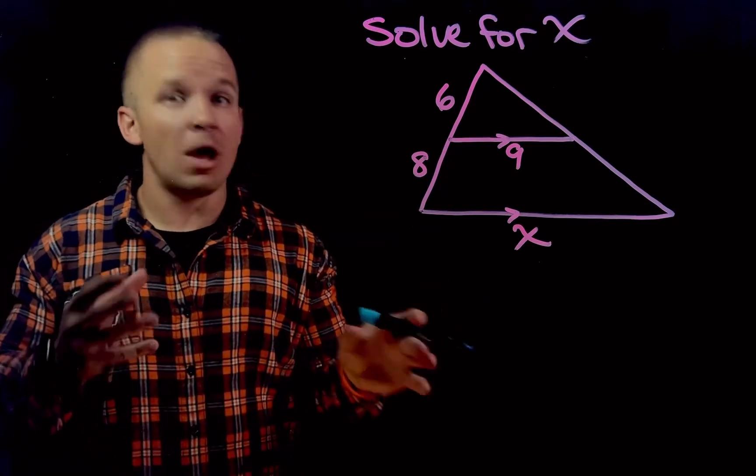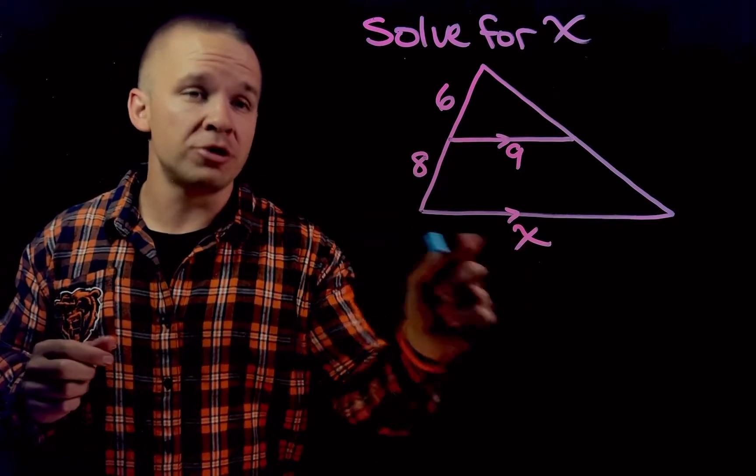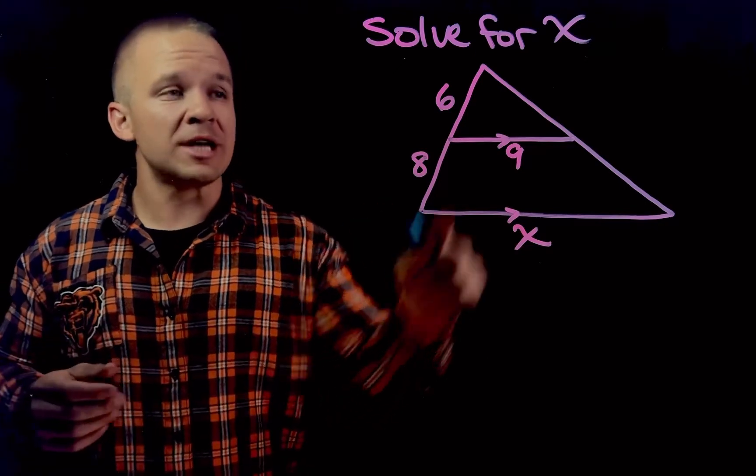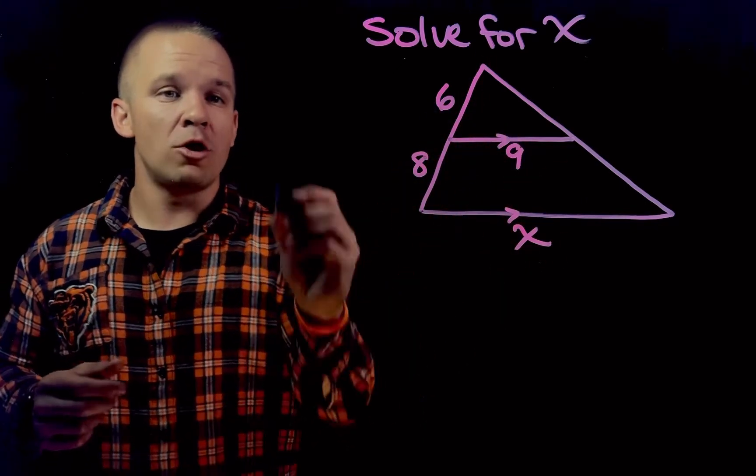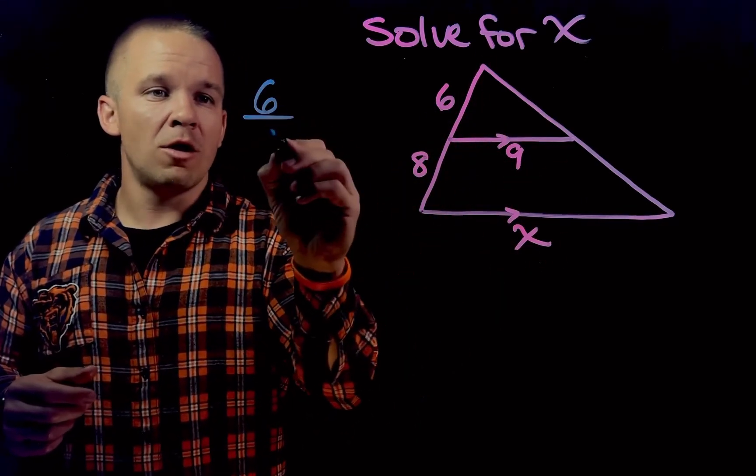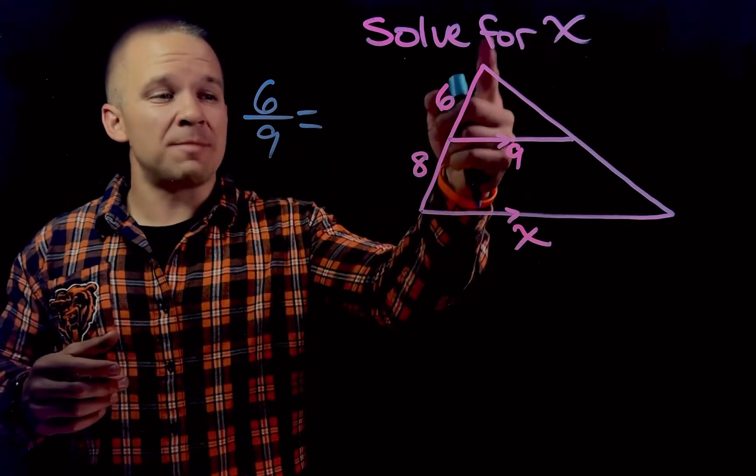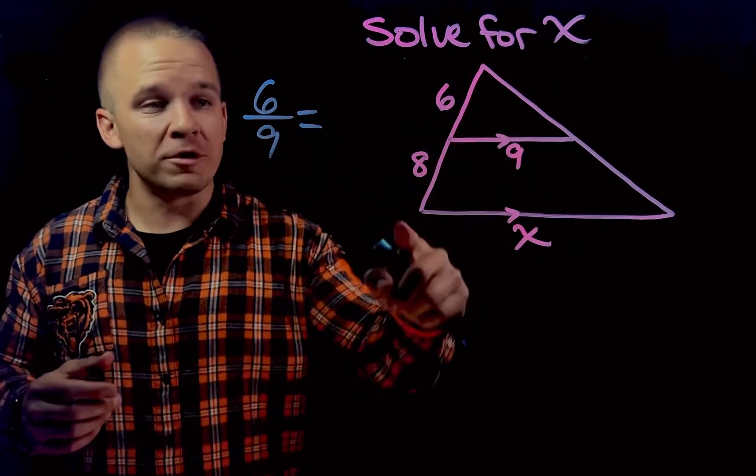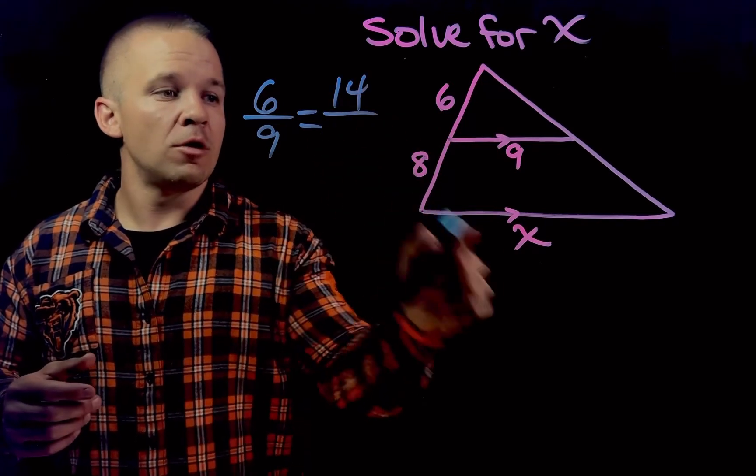That means that their sides are proportional, and I can use that to set up a proportion to solve for X. So what I can do is I can take my sides of my small triangle, which is 6 over 9, and set it equal to the sides of my larger triangle, which would be 14 over X.